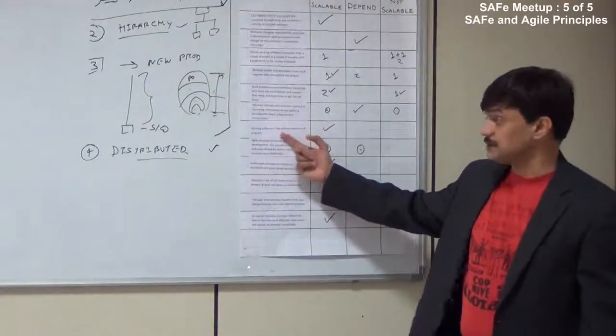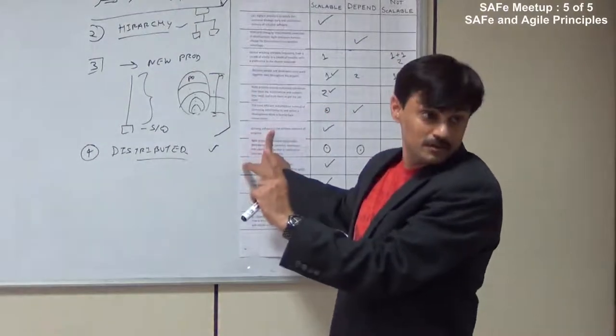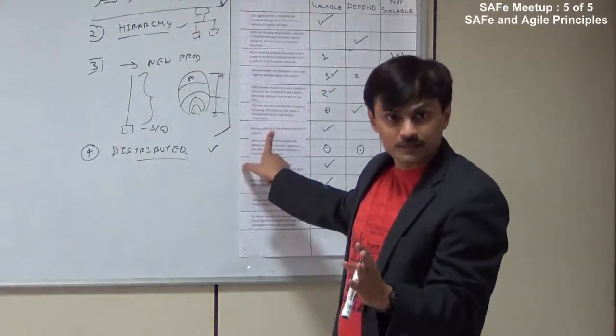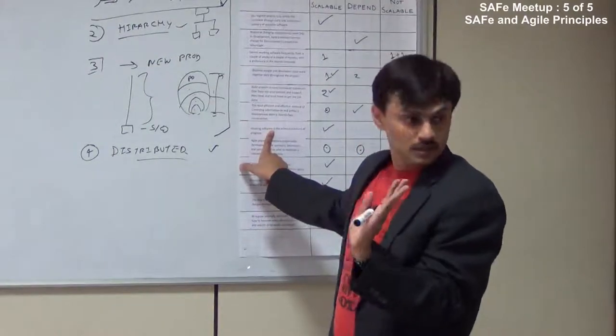Working software is a primary measurement of progress. That is very obvious. Every two weeks you have a program level implement. Think about your scaling implementation. Many times you don't have a program level implement for months.